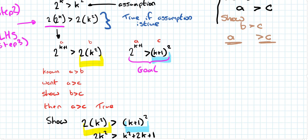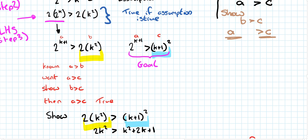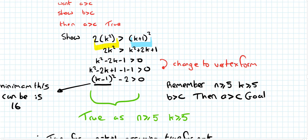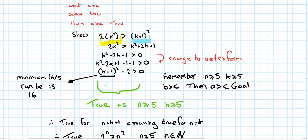Fill in the values for b and c, multiply both sides out. From there, subtract k squared from both sides, subtract 2k from both sides, subtract 1 from both sides. This gives us (k−1) squared minus 2 is greater than 0. This is true as long as n is greater than or equal to 5, meaning k is greater than or equal to 5. If you sub in k=5: 5 minus 1 is 4, 4 squared is 16, and 16 minus 2 is 14, which is greater than 0. So b greater than c is shown, and therefore a must also be greater than c — goal met.